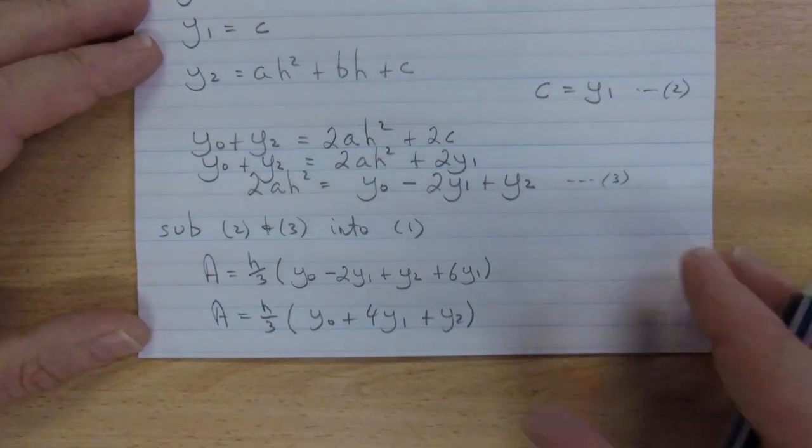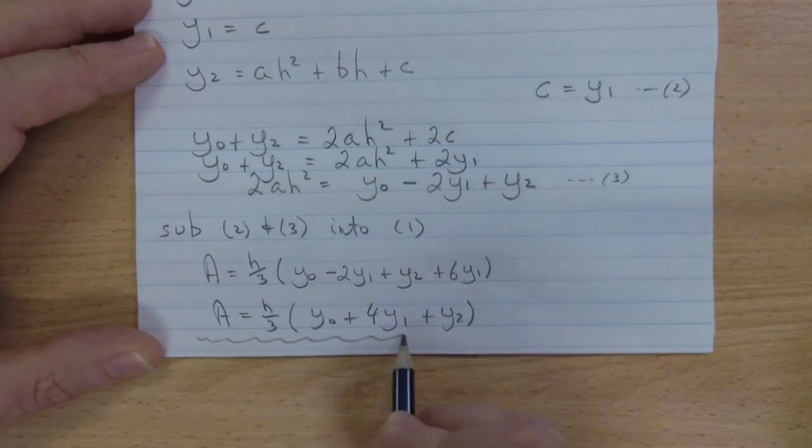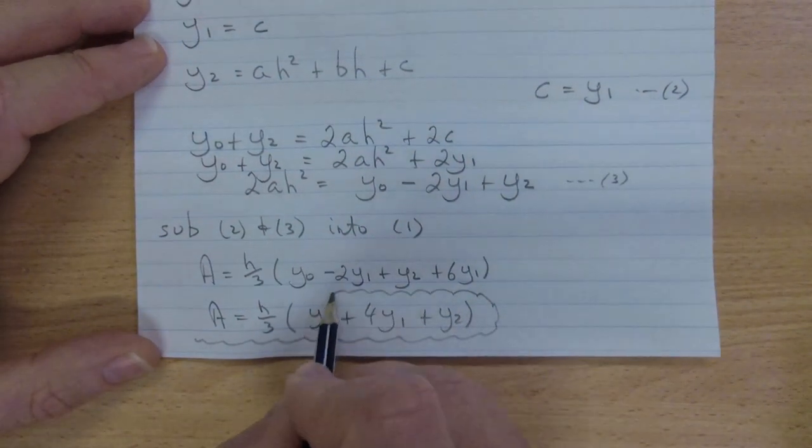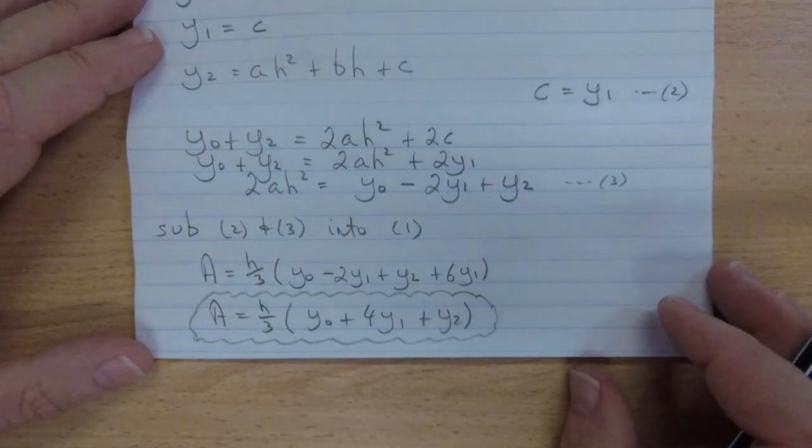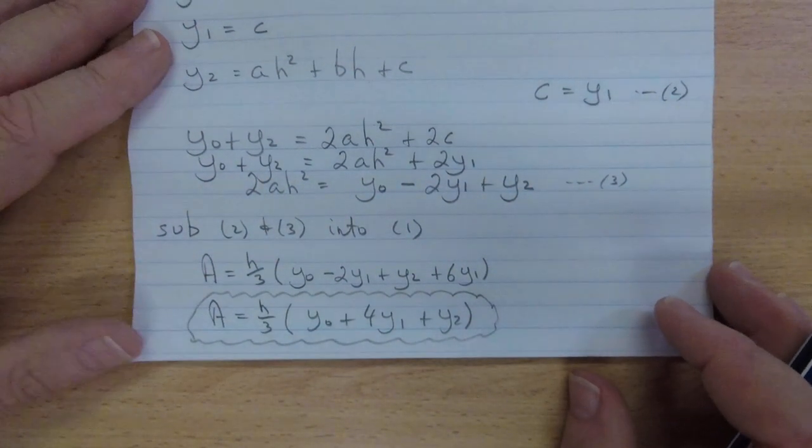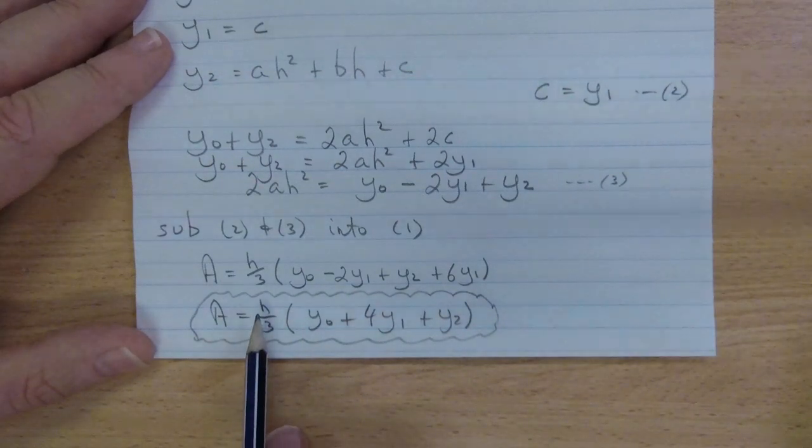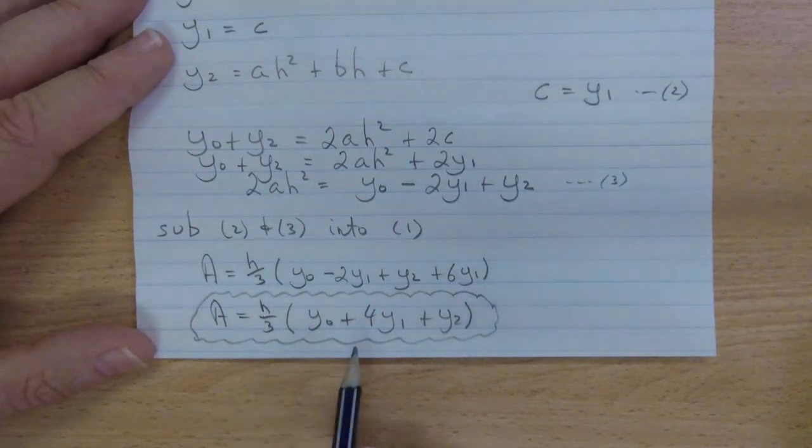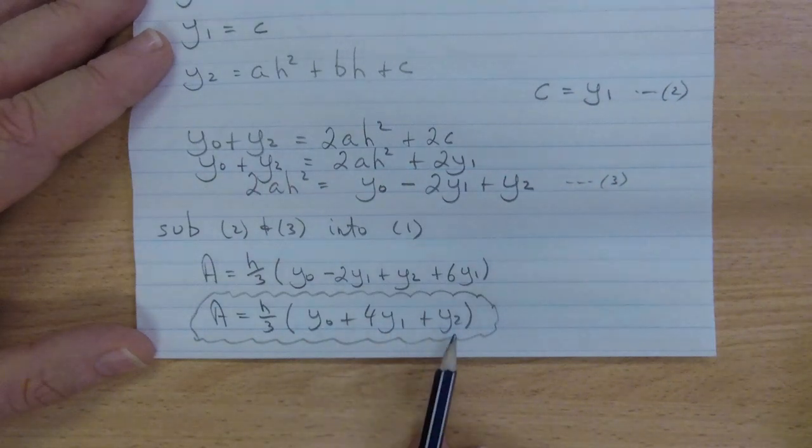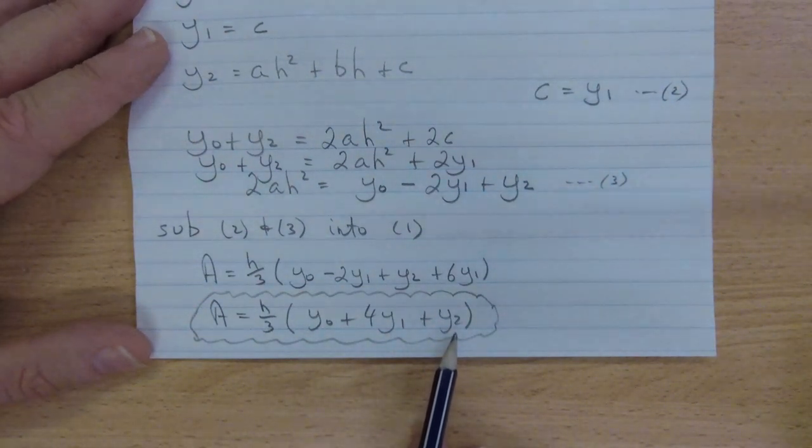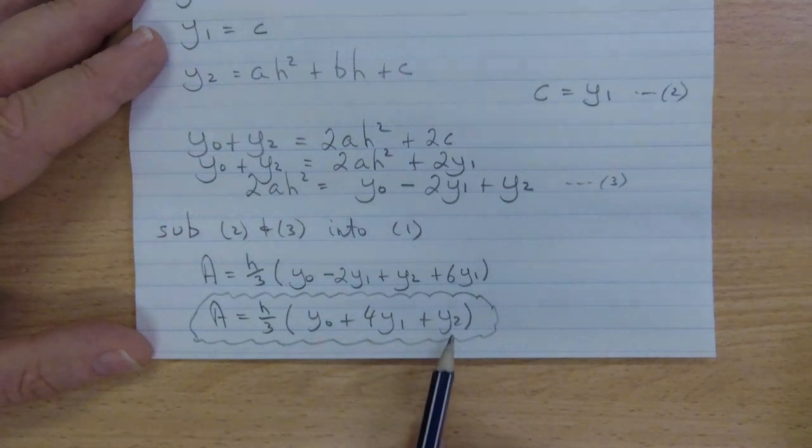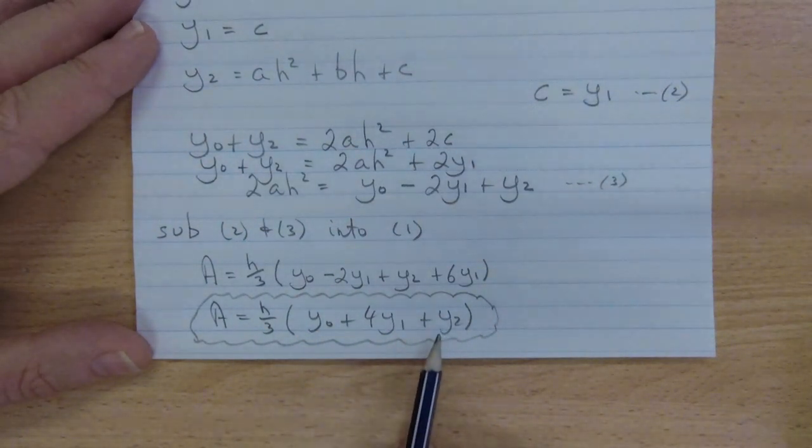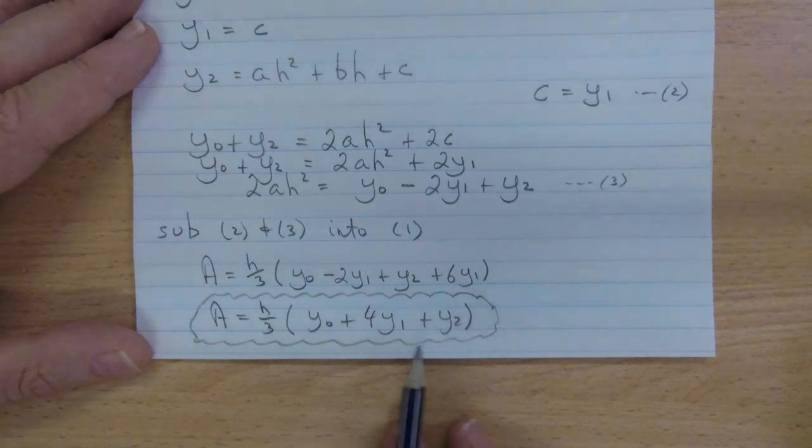And this is what we need. This thing is going to tell me the area underneath that function approximated by a parabola between three points. All I need to know is h, the width of each of the strips. And then y0, y1 and y2, the y coordinates of the points. So I can easily find those either by substitution into a formula or by measurement. Sometimes these things are just done by measurement.